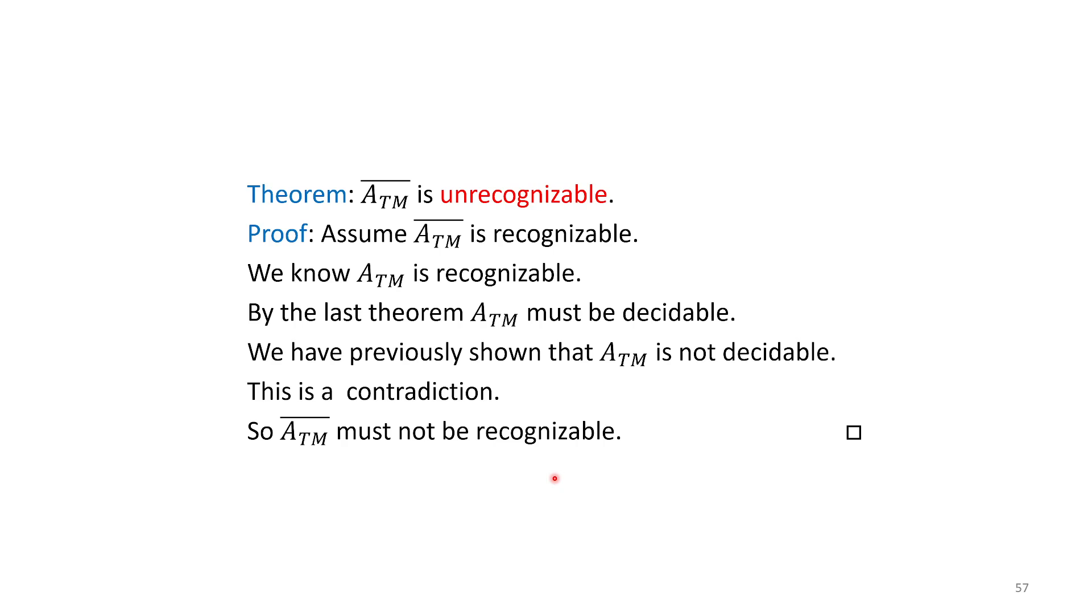In this video, we've seen our first undecidable language and our first unrecognizable language. These are the key ones we show off, very similar to what Turing originally proved. In our next video, we're going to look at ways we can demonstrate that other languages might also be undecidable or unrecognizable. Thanks for watching, and we'll see you in that next video.